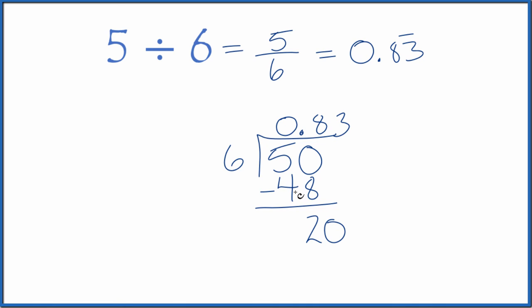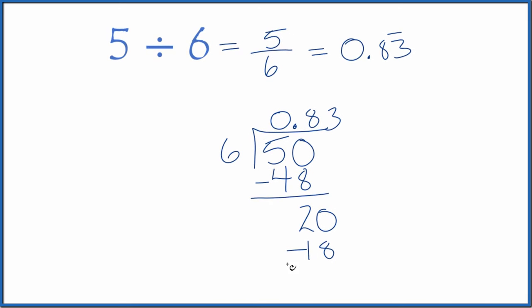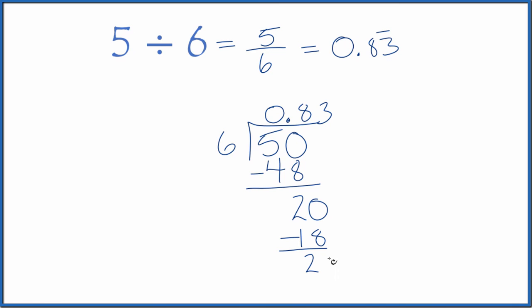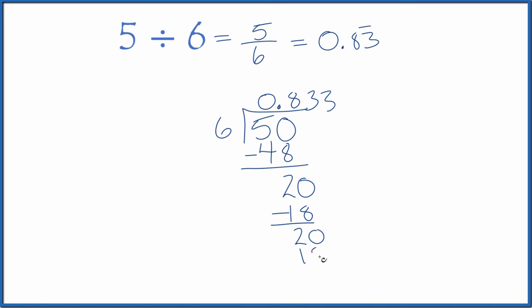And we can move over a decimal place here. And 3 times 6, that's 18. So we subtract and we get 2. So we move over 1 here, that's 20. 3 times 6, that's 18. And you can see what happens. This is just going to keep repeating here.